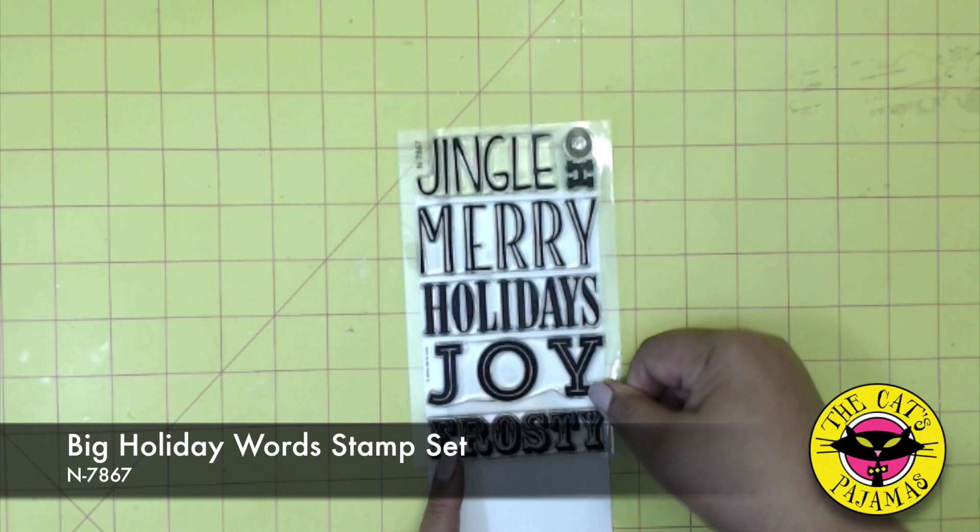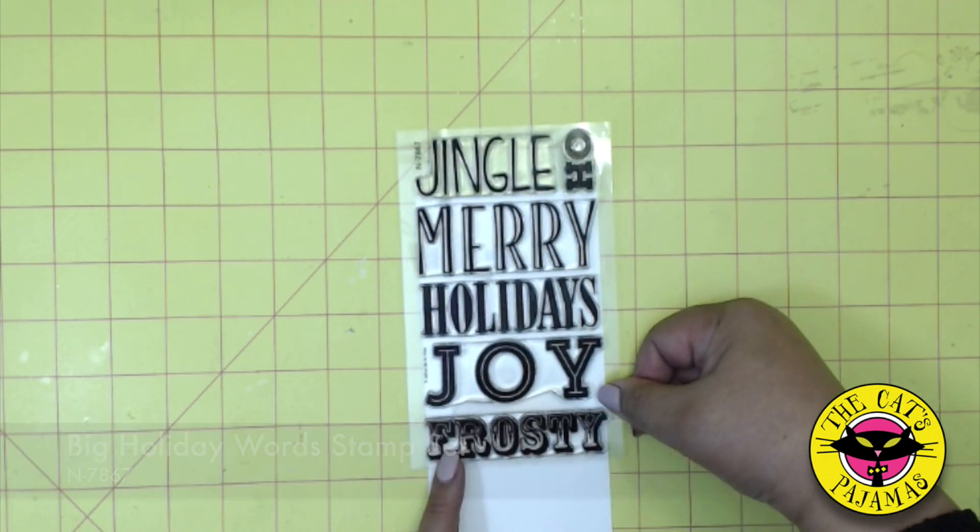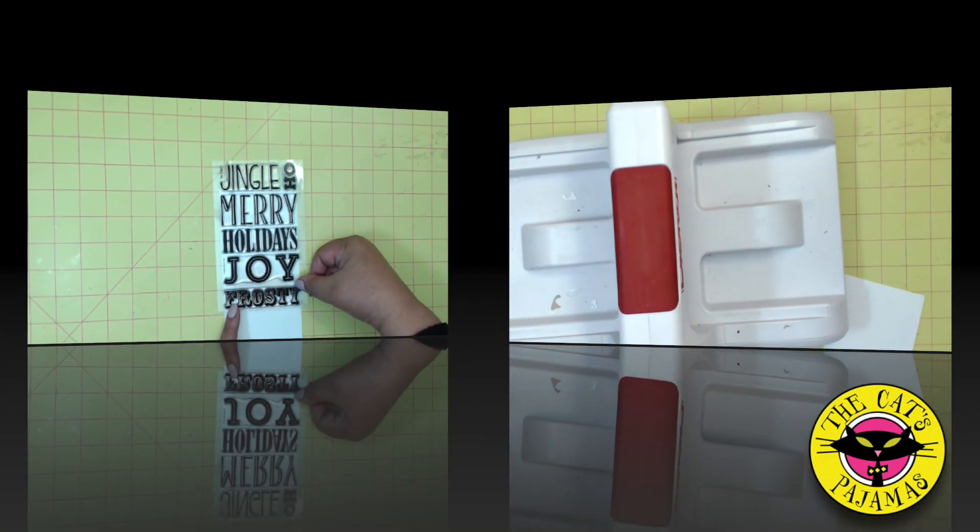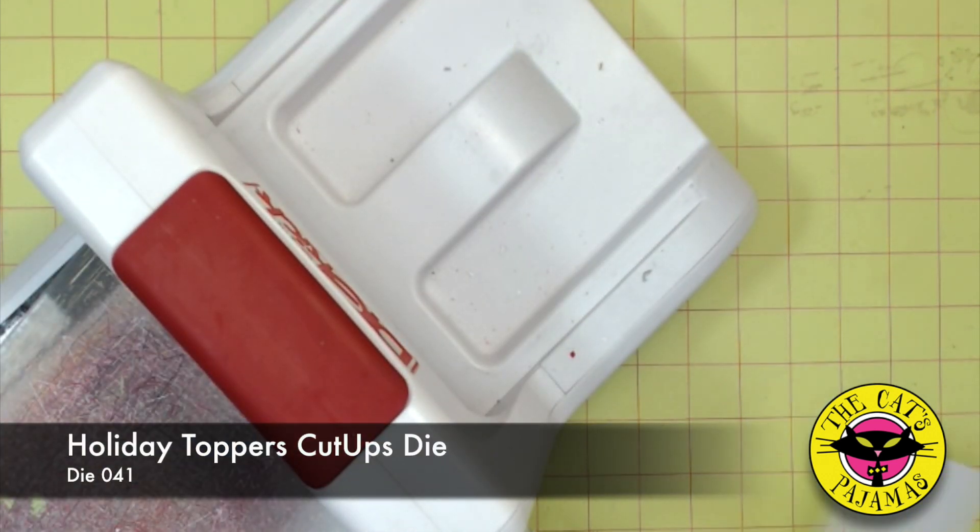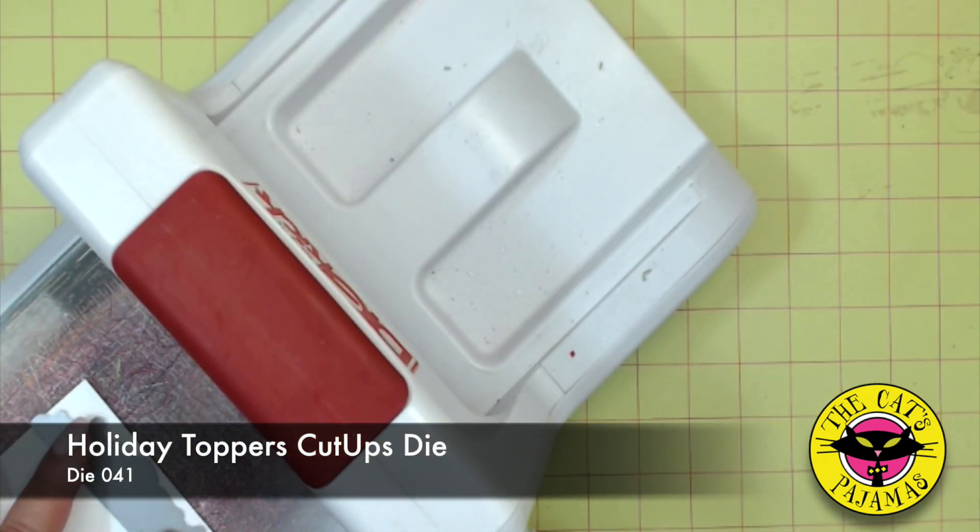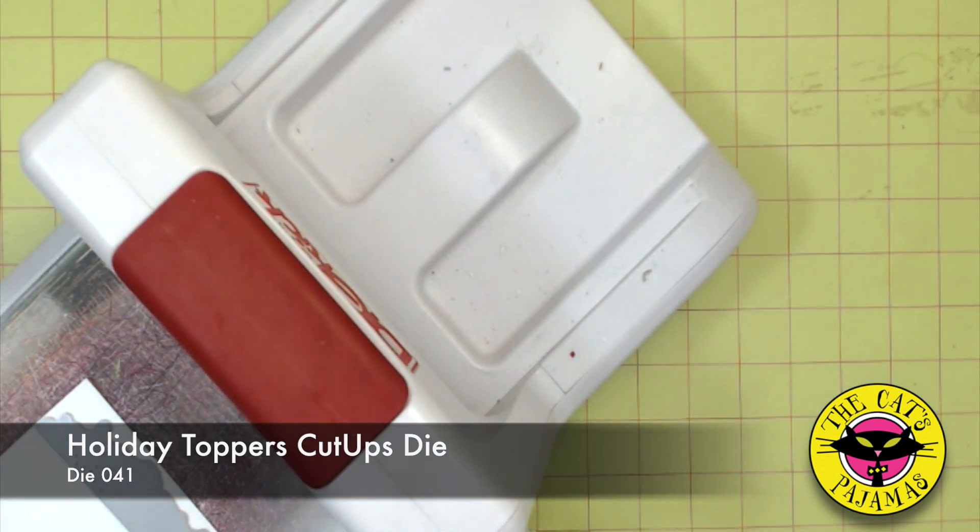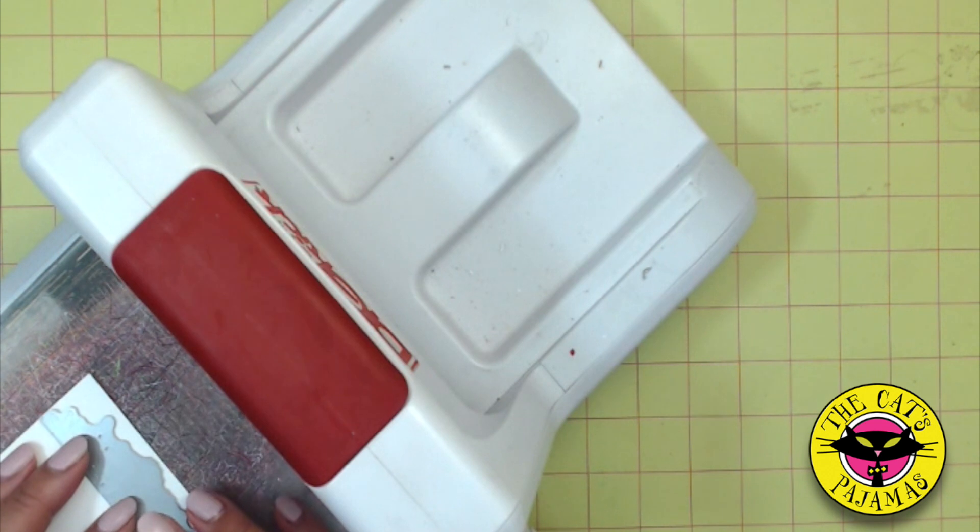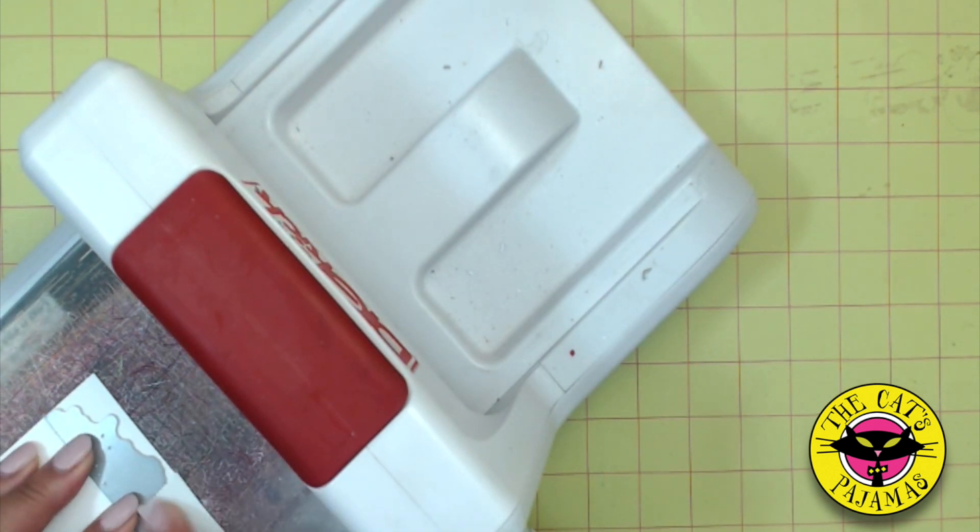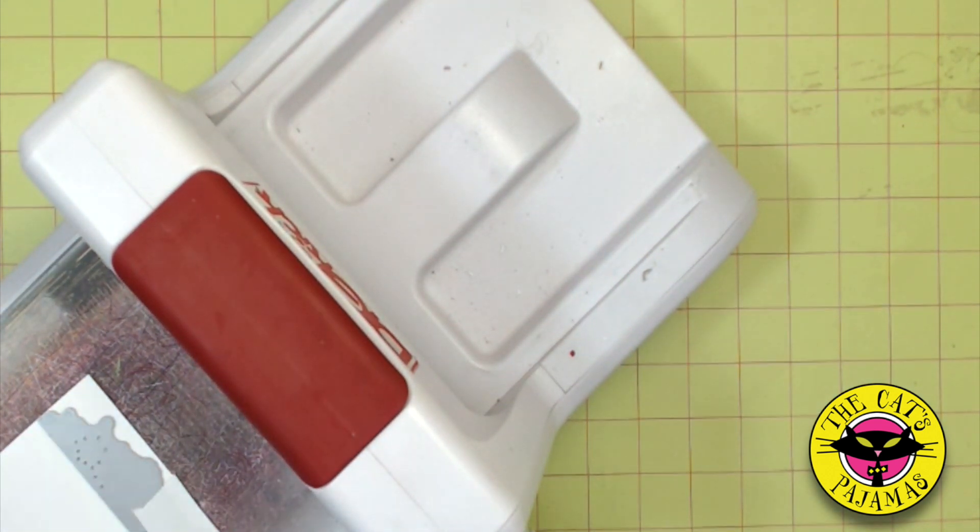There are so many great words in this set, but since I want to do a snowman, I think I want to use Frosty. I want to make sure that the die doesn't shift at all when it goes through the die cut machine, so I'll use low tack tape to hold it in place. Now I'll just run it through.